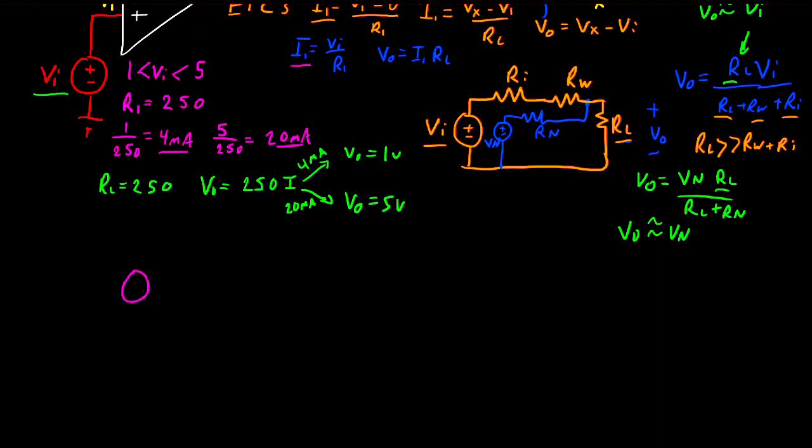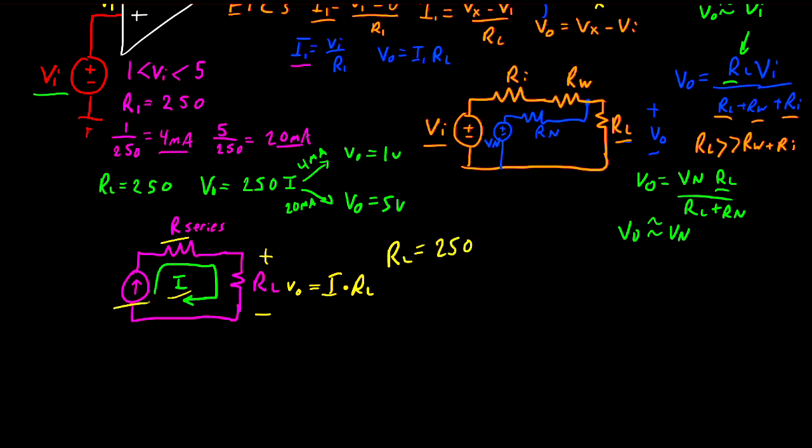Instead of using a voltage source, what if we had a current source, and we still have some series resistance, and this is RL, and this is our current going through. In this case, our series can be anything, and the current is going to remain the same because we have a current source. And the voltage we see at RL is going to only be based on I multiplied by RL. And now we're free to make RL be a smaller number, like 250. And because we're supplying this with a current source, our signal doesn't have voltage division, but the noise source that's still present in this system will have voltage division with this smaller number of 250. So this is greatly going to reduce the noise we see in our output, and it's going to prevent voltage division errors from our input.